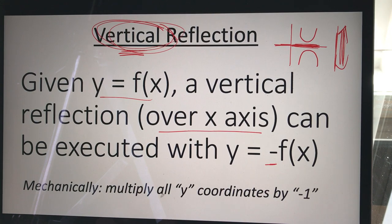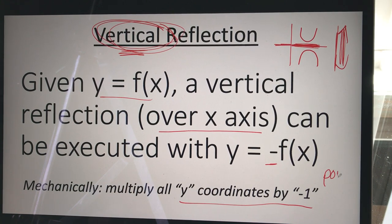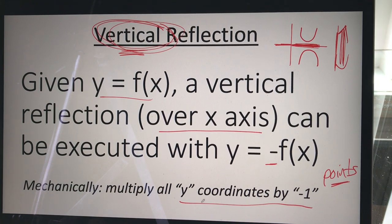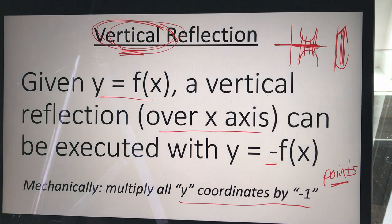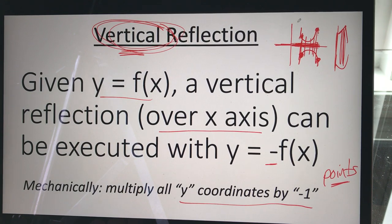Mechanically, to do that we just multiply all the y-coordinates by negative one. We're going to track this with points rather than just sketching, because sketching alone is too difficult to communicate our solutions clearly. So all we have to do is multiply our y-values by negative one. All the x-values stay the same — instead of going over and up to a point, I go over and down to that point.